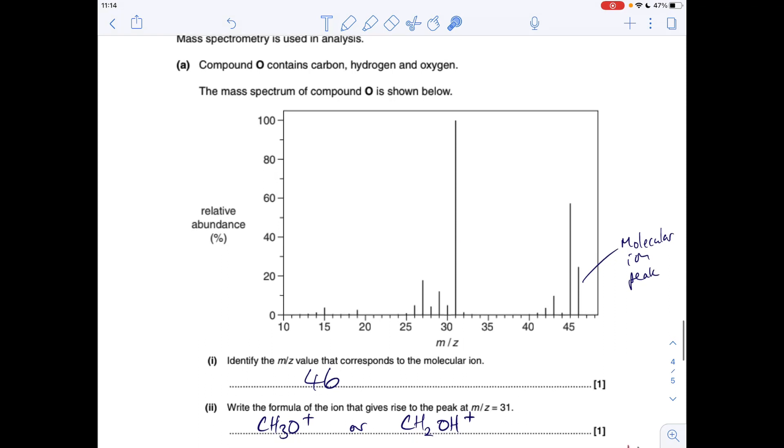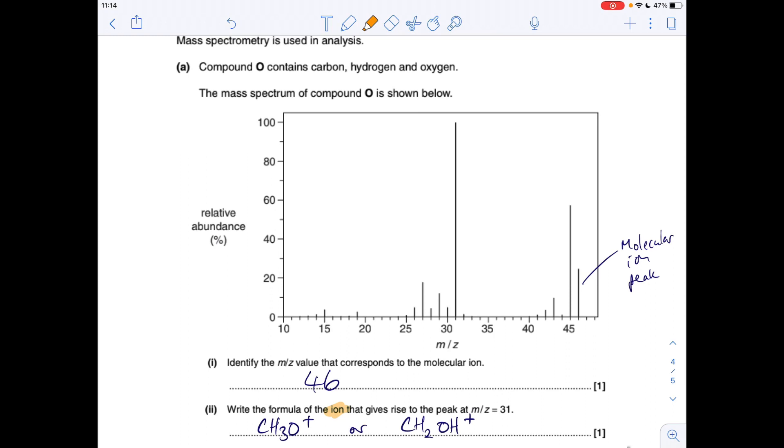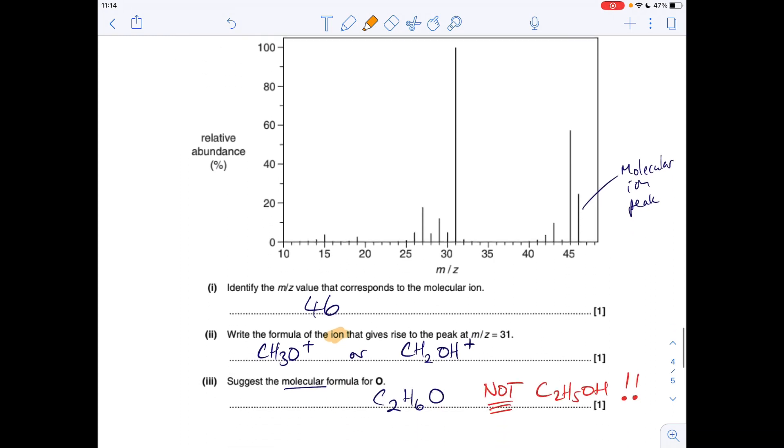So this fragment peak here. So basically you're just playing around with the MRs of carbon, hydrogen, and oxygen to get 31. So CH3O plus or it could be CH2OH plus. Whatever you do, don't forget the positive charge because these things are always positively charged ions.